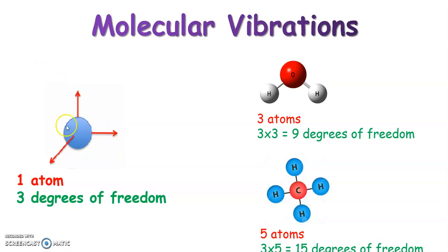For one atom moving in space, its motion is purely translational — that is, the motion by which a body shifts from one point in space to another. So for one atom, it possesses only translational degrees of freedom: three translational degrees of freedom along three mutually perpendicular directions. But for a molecule, since the atoms are bonded together, all motions are not translational — some become rotational and some others vibrational.